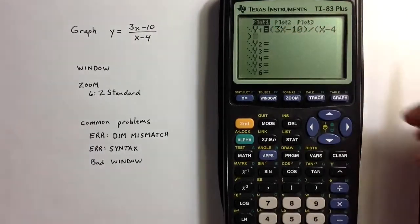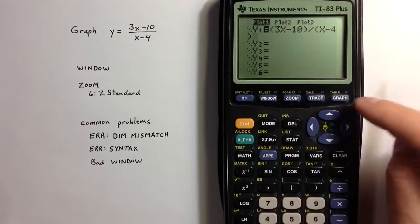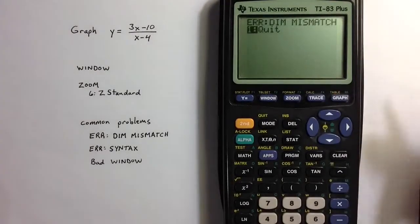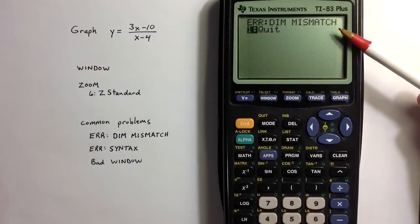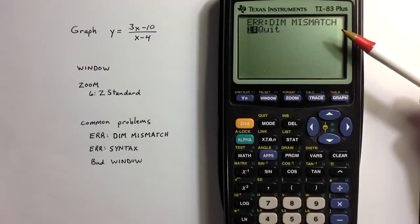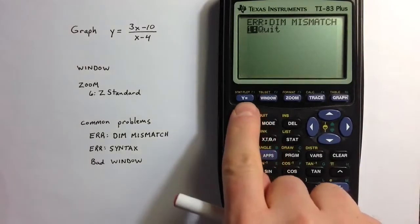And so if I try to graph it, it's going to give me a dimension mismatch error, because the lists that that stat plot is trying to read aren't matched correctly. So to correct the problem...